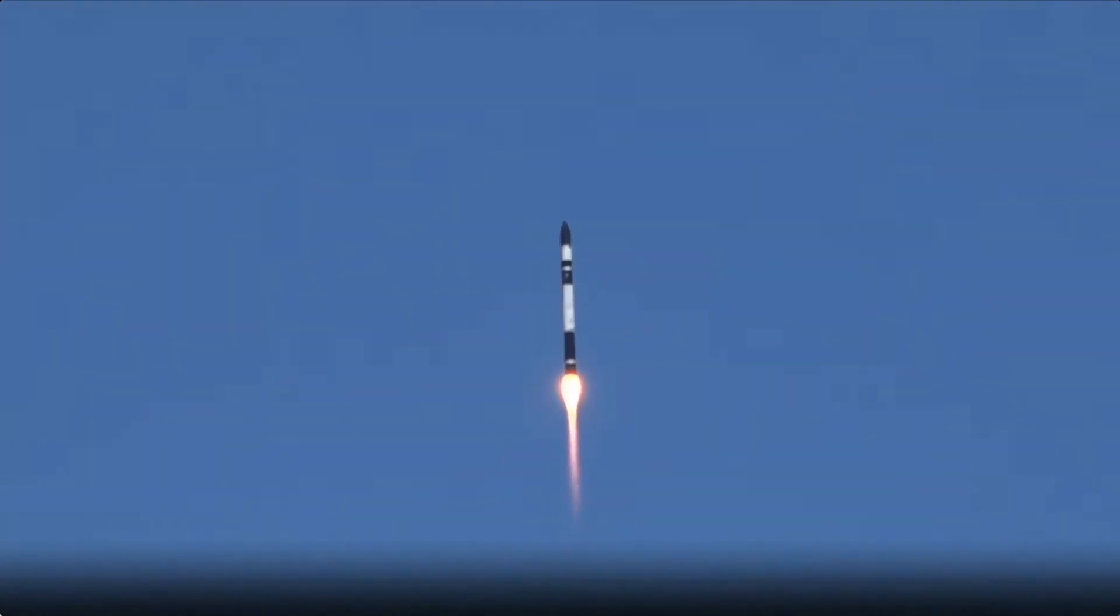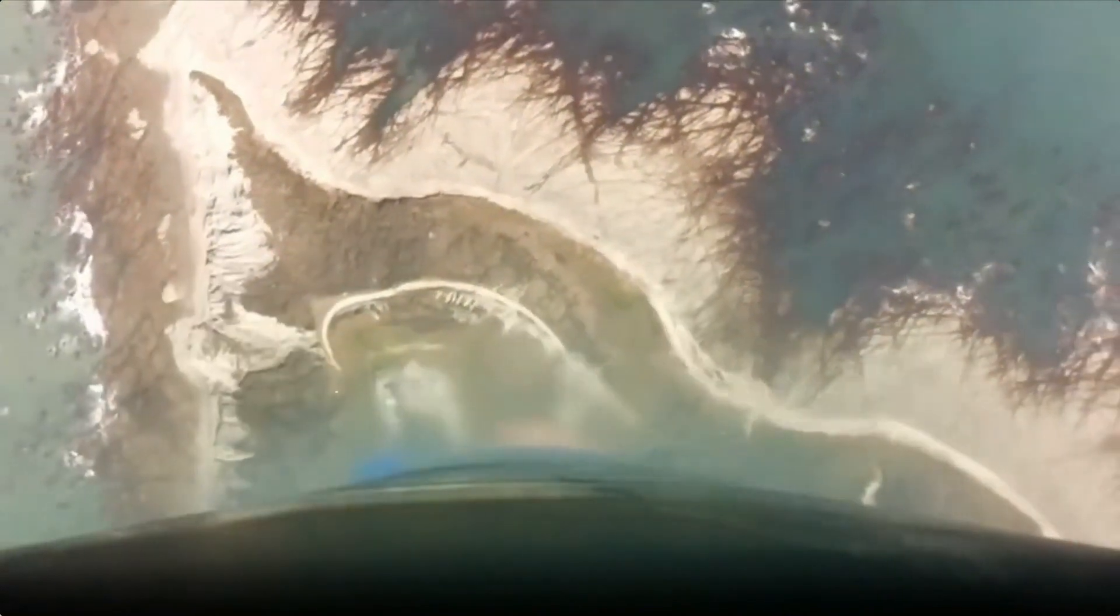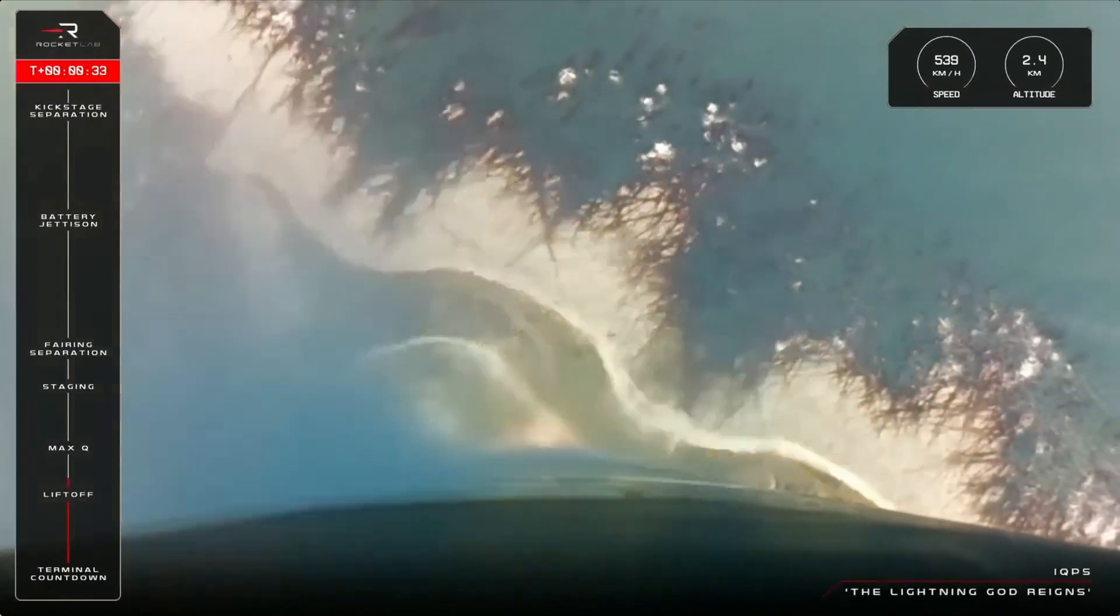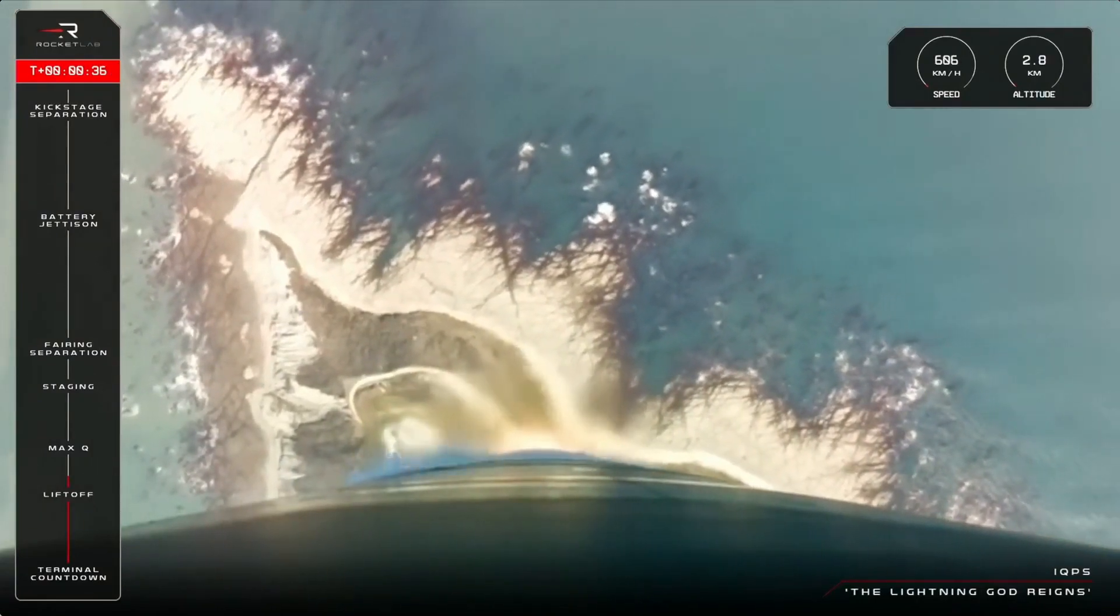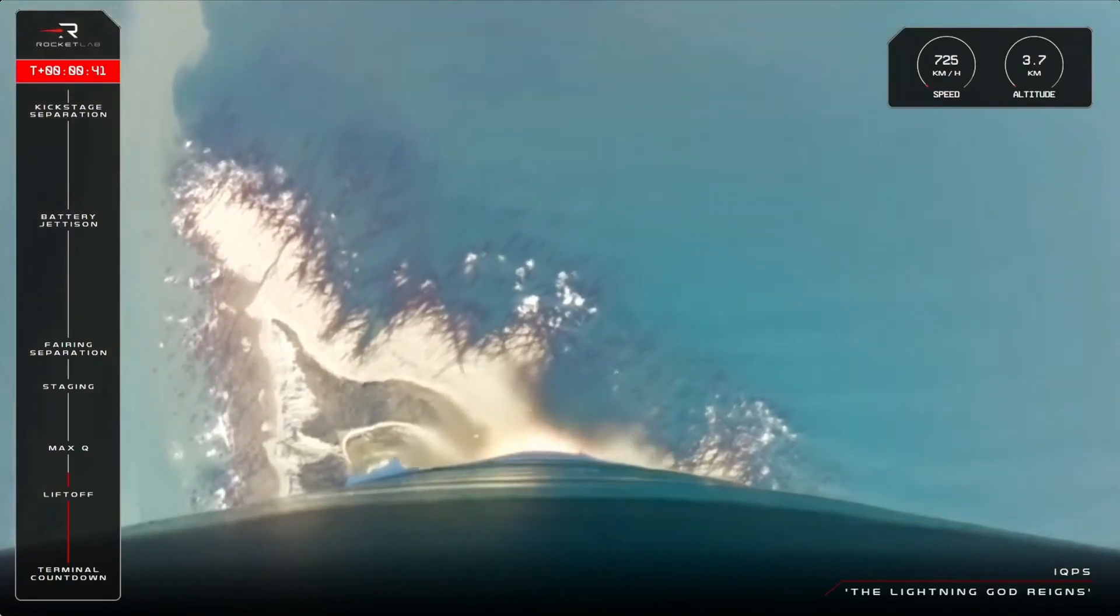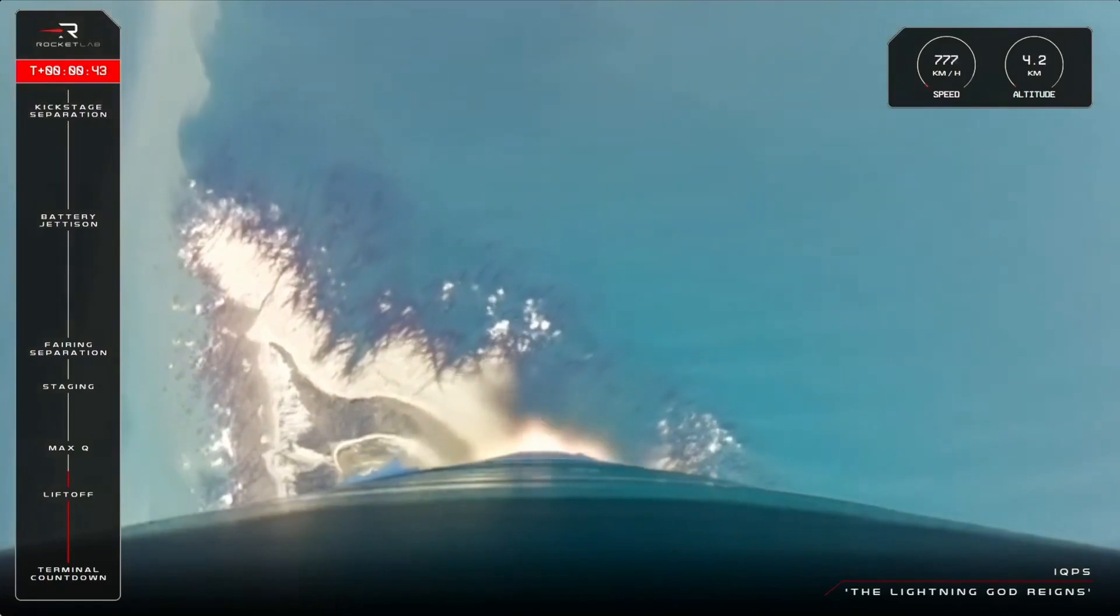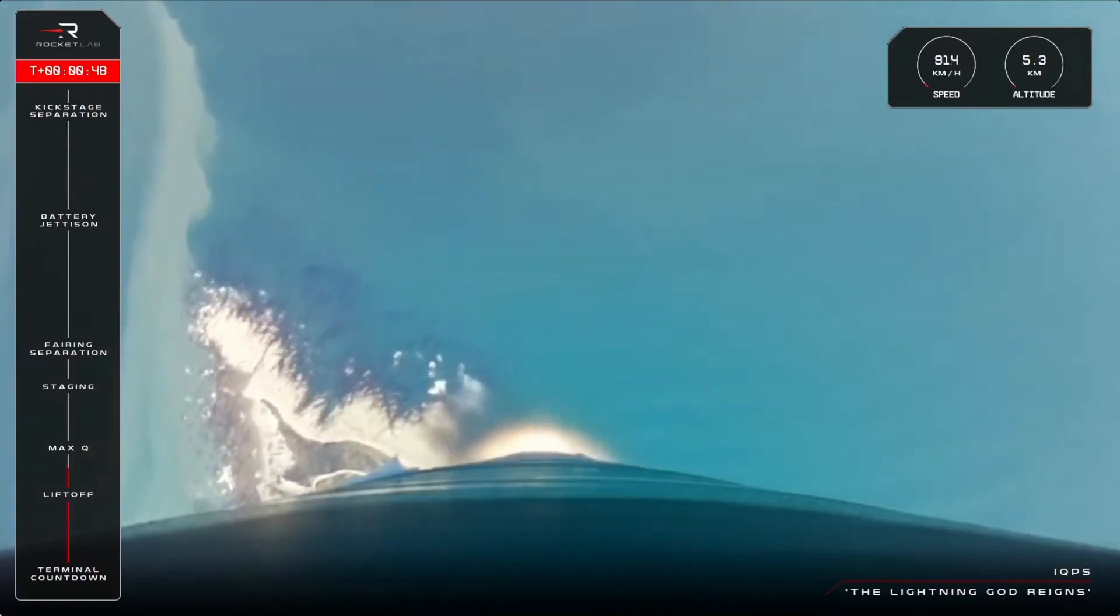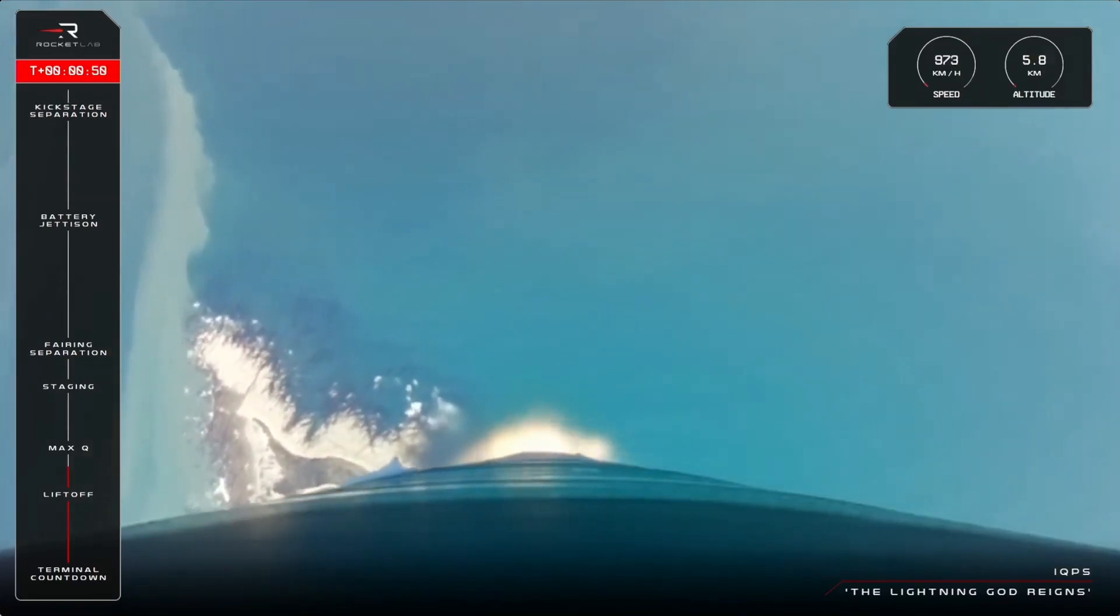Beginning pitch level. Stage one, propulsion nominal. The Lightning God Reigns has begun and we are on our way to space. Electron has lifted off from launch complex one, cleared the pad and is now traveling at over 800 kilometers per hour as it propels IQPS's satellite towards orbit.